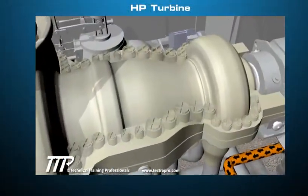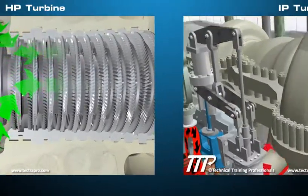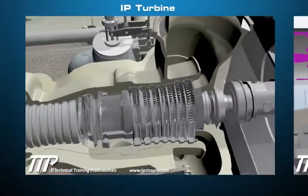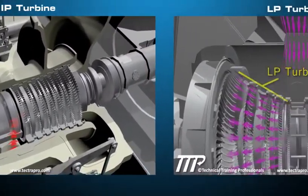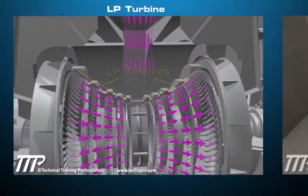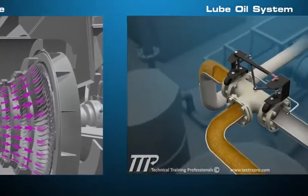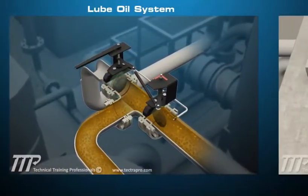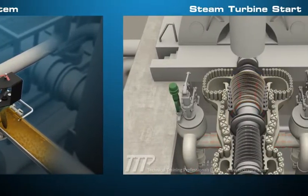Main turbine systems are covered. They include the HP turbine, IP turbine, LP turbine, lube oil system, and steam turbine start procedure.